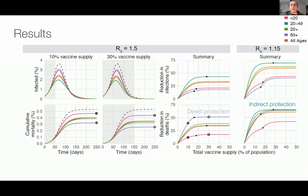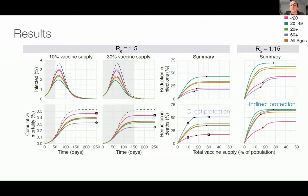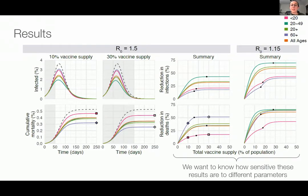That's one very specific scenario, just to give you a sense of what these model results look like. If we consider changing one of these parameters — say you're in a region where transmission is highly mitigated and the reproductive number is much lower and close to one — then we see that we get the same result on the top row. If the goal of vaccination is to minimize the total number of infections, the best way to do that is to prioritize adults 20 to 49. We actually see it's also the best option to minimize mortality in this case. What we're really trying to understand is when direct protection versus indirect protection is the best way to minimize mortality, and specifically how sensitive our results are to these different parameters.